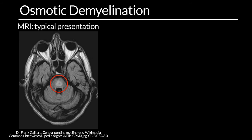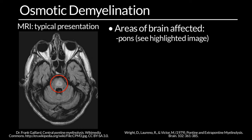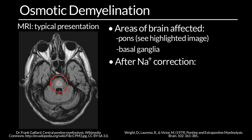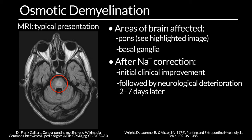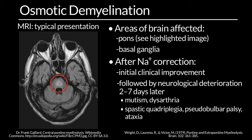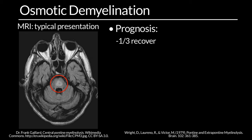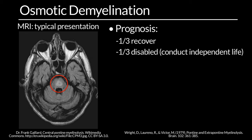Osmotic demyelination can be visualized on MRI, typically presenting with PONS lesions, but other areas like the basal ganglia can also be affected. Following sodium correction, there is an initial clinical improvement followed by neurological deterioration at 2–7 days, with mutism, dysarthria, spastic quadriplegia, pseudobulbar palsy, ataxia, and locked-in syndrome. One third of patients recover fully, one third remain disabled but can conduct an independent life, and one third are severely disabled.